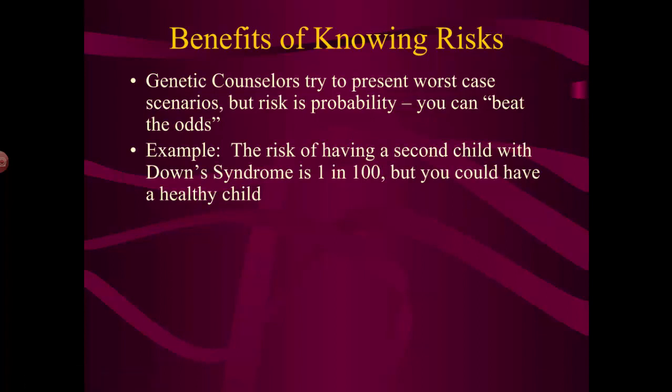It's a risk, yes, but it may weigh pretty heavily in your favor. For example, having a second child with Down syndrome — if you've already had one child with Down syndrome — there's a one-out-of-a-hundred chance. Is that an acceptable risk? It seems pretty low. That's up to you to decide, but that's the type of information that genetic counselors will present you with.